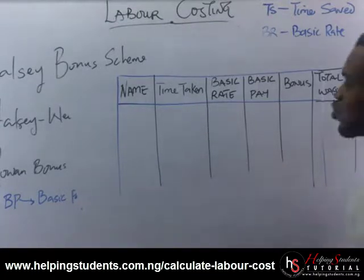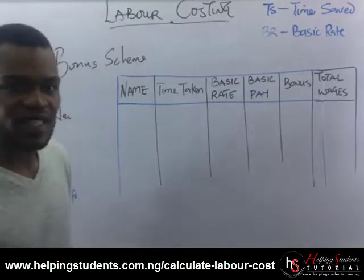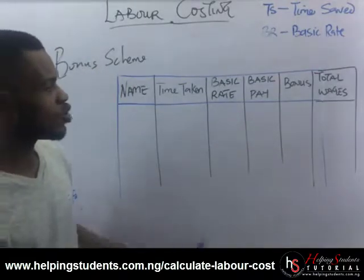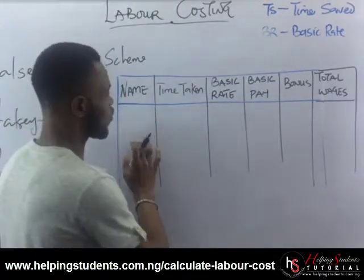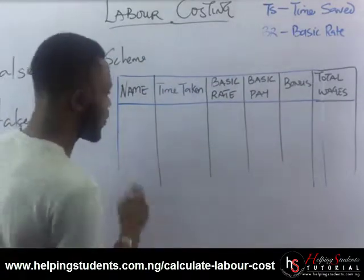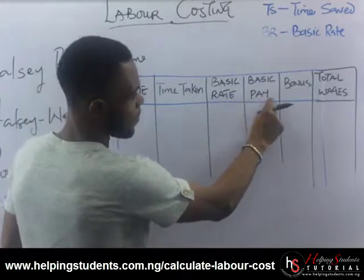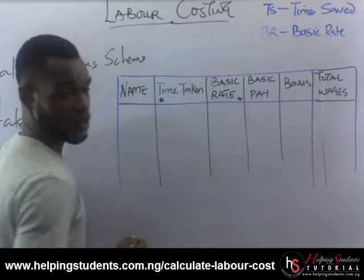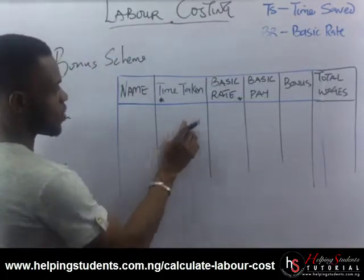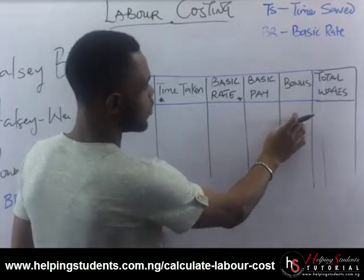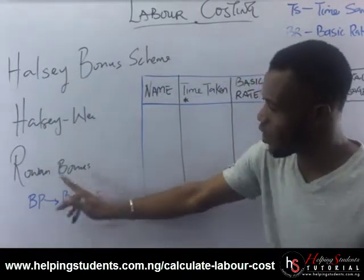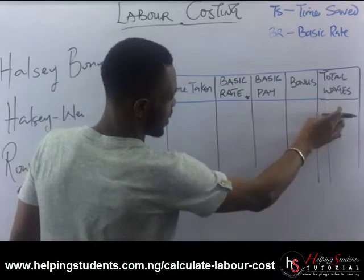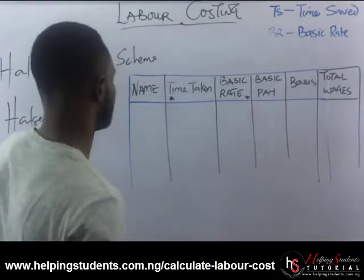In some questions, if you are asked to get the gross pay — which is also the total pay — there are steps you need to take. The time taken and basic rates will be given in the question. To determine your basic pay, you multiply those values. Then to get your bonus, you work with either of the three formulas: house sale bonus, house sale wear, or row one bonus. Finally, to get your total wages, you add the basic pay and bonus together, which gives you the gross pay.